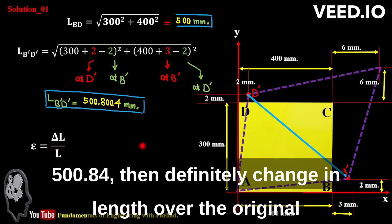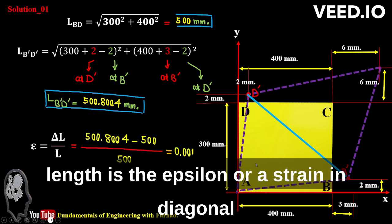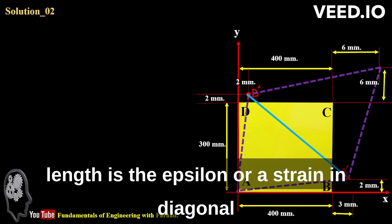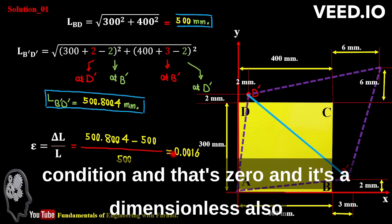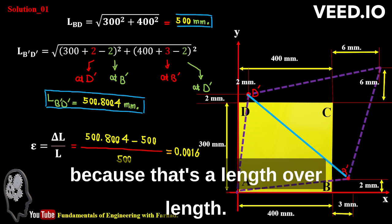And then definitely change in length over the original length is the epsilon or strain in diagonal condition. And that's 0.0016, and it's dimensionless also because that's length over length.